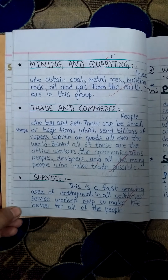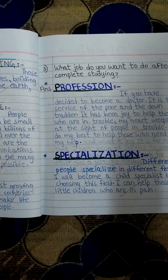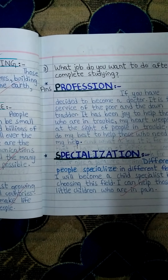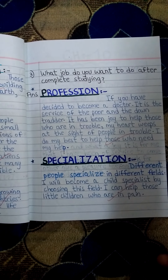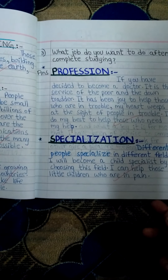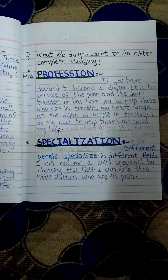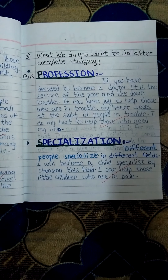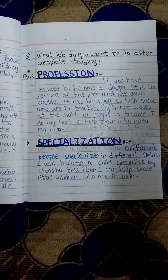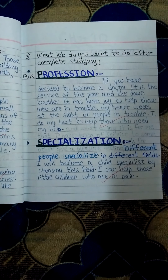Question number three: I am dictating this answer, but you can do it yourself. What jobs do you want to do after completing your study? Profession: if you have decided to become a doctor, it is the service of the poor and the downtrodden.